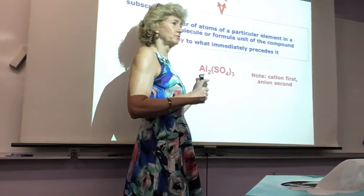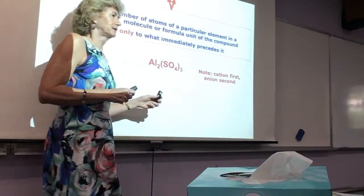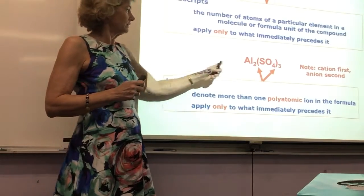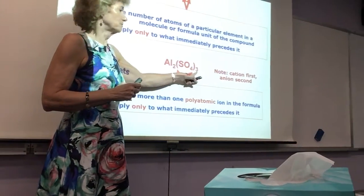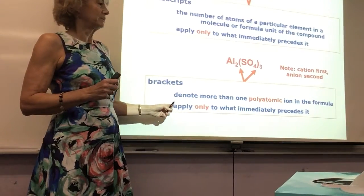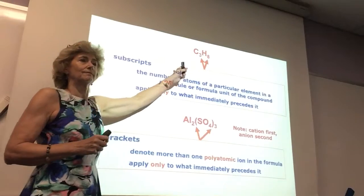So we always write the cation first, which is the metal, if it's a metal to a non-metal, and then the anion second. And then these brackets denote that there's more than one of these sulfate ions. So in fact, there's three of them in this compound. And it only applies to what immediately precedes it, just like the three only applies to the carbon.